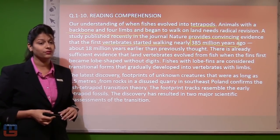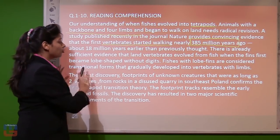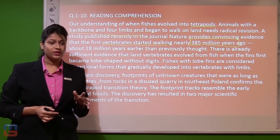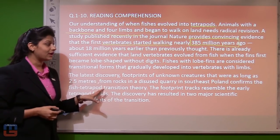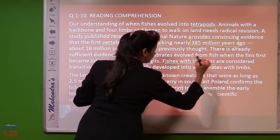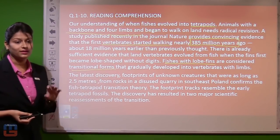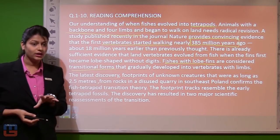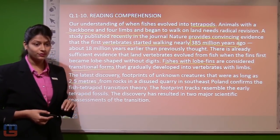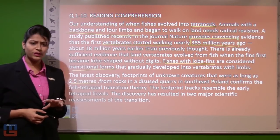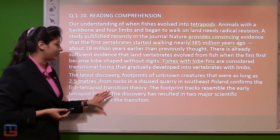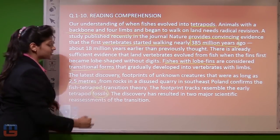There is already sufficient evidence that land vertebrates evolved from fish when the fins first became lobe-shaped without digits. Fishes with lobe fins are considered transitional forms that gradually developed into vertebrates with limbs. The latest discovery — footprints of an unknown creature as long as 2.5 meters from rocks in a disused quarry in South East Poland — confirms that the fish-tetrapod transition theory is correct. The footprint tracks resemble the early tetrapod fossils, matching fossils acquired earlier.